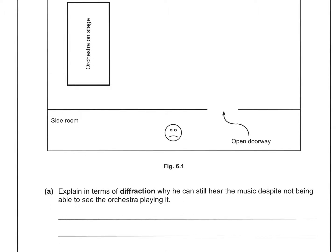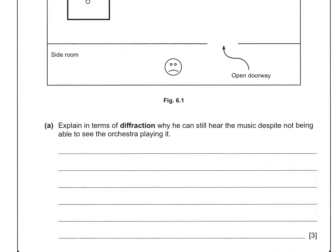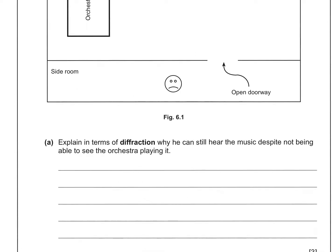Explain in terms of diffraction why he can still hear the music despite not being able to see the orchestra playing it. Now this question is more than a little dodgy and I'll explain after I talk about what the mark scheme says.